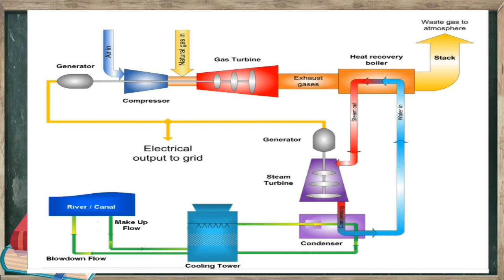Here a gas turbine and a steam turbine are used in conjunction. The gas turbine produces electricity and waste heat, which in turn is used to produce steam to generate additional electricity through the steam turbine.